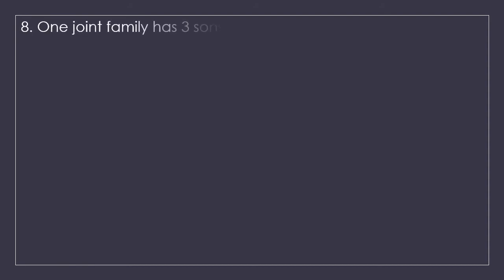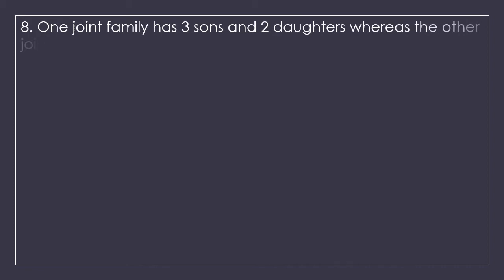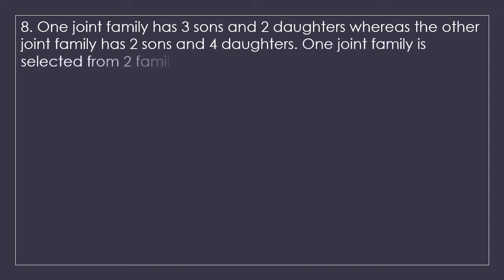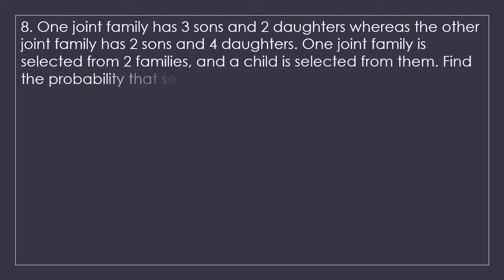Starting with question number 8: one joint family has 3 sons and 2 daughters, whereas the other joint family has 2 sons and 4 daughters. One joint family is selected from the 2 families and a child is selected from them. Find the probability that the selected child is a daughter. At first glance it seems similar to question 7, but here we select 1 out of 2 families first, then select a child from the selected family. Breaking it down will make it easier.